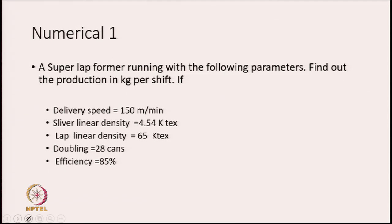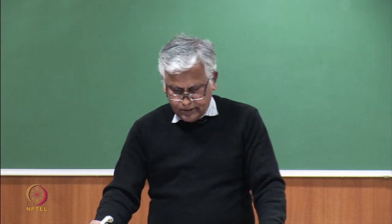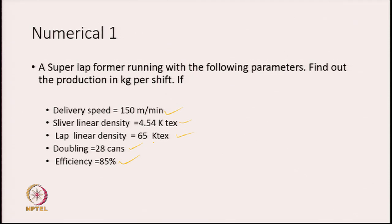A super lap former is running with the following parameters: find out the production in kg per shift. The delivery speed is given, sliver linear density is given, lap linear density is given, doubling is the number of cans — there are 28 cans and 28 slivers being fed — and the efficiency is 85%. If we know production per hour, we can find per shift because every shift means basically 8 hours, or sometimes 7.5 hours because a 30-minute recess is given.